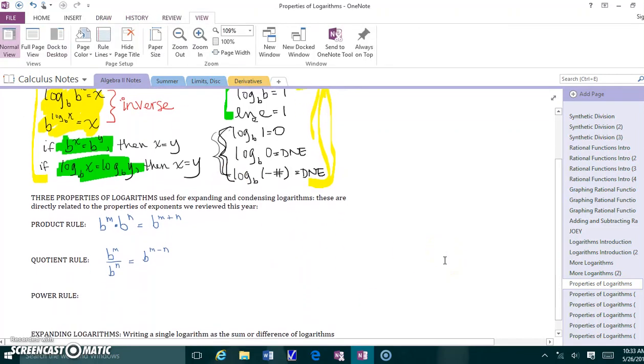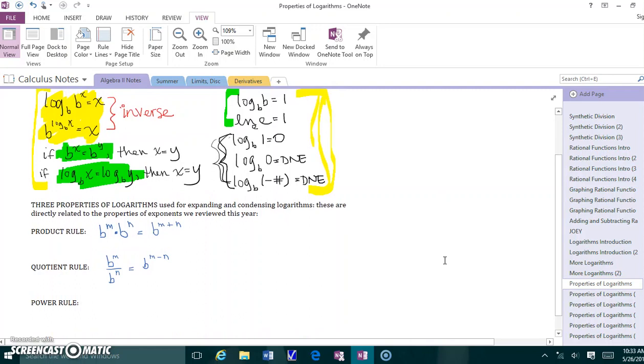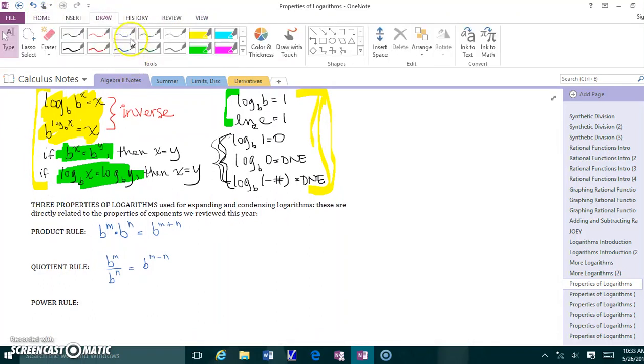So let's move on to three more properties of logarithms. Now these properties are used to do what's called expanding and condensing logarithms. And those are things that we're going to be doing tomorrow in class to solve harder equations. Now these rules come from the properties of exponents because, remember, logarithms and exponents are inverses, so their properties are directly related to one another.